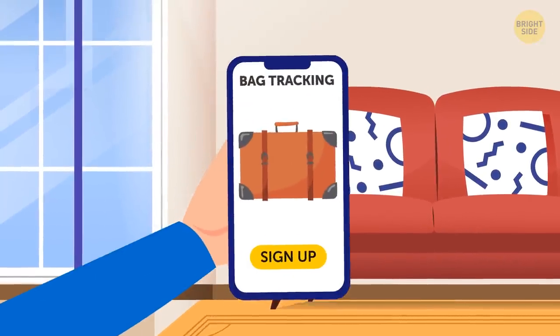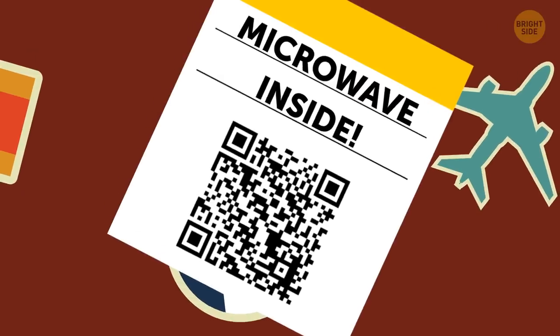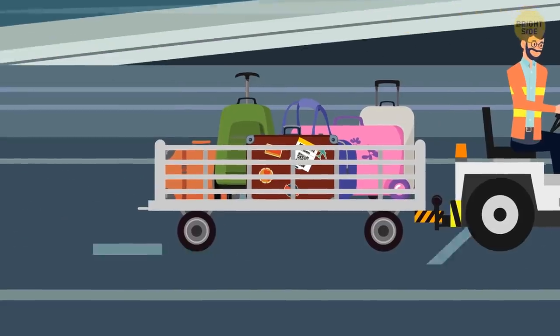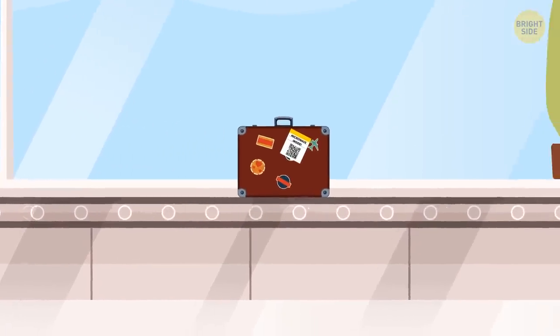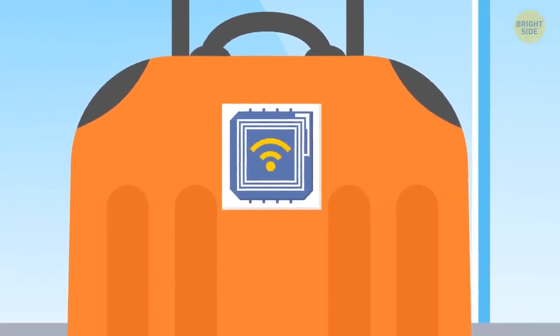Sign up for bag tracking. Some airlines let you do it through a mobile app. Your checked-in baggage will be scanned at check-in, during loading onto the plane, on transfer from one flight to another, and when it arrives at the final destination. You can also buy a GPS tracker or luggage that comes with it.